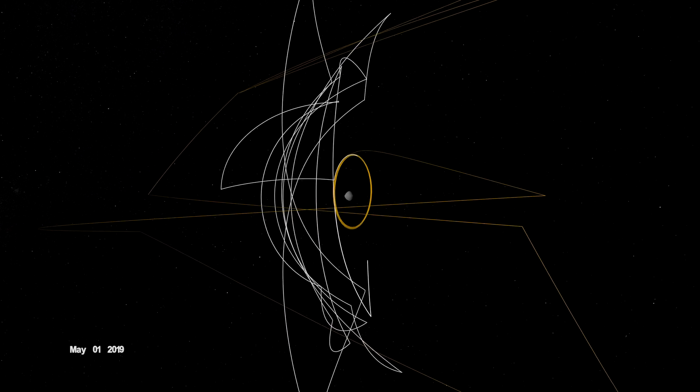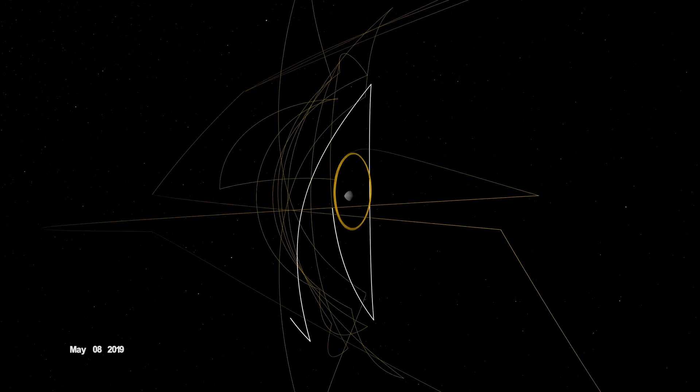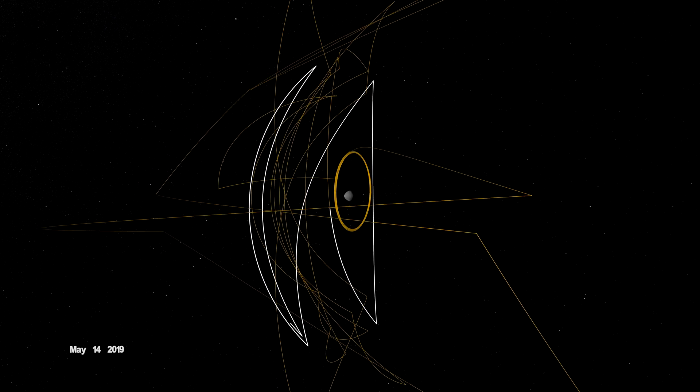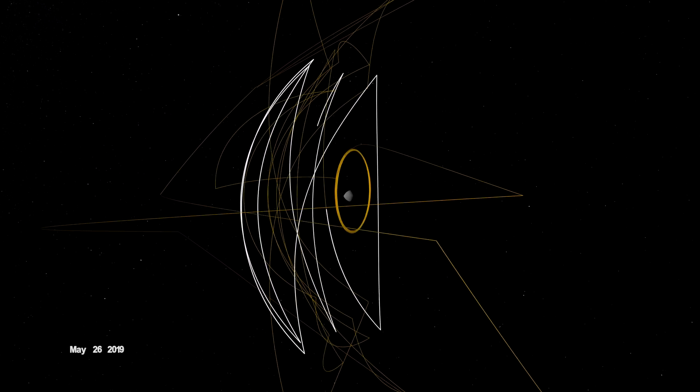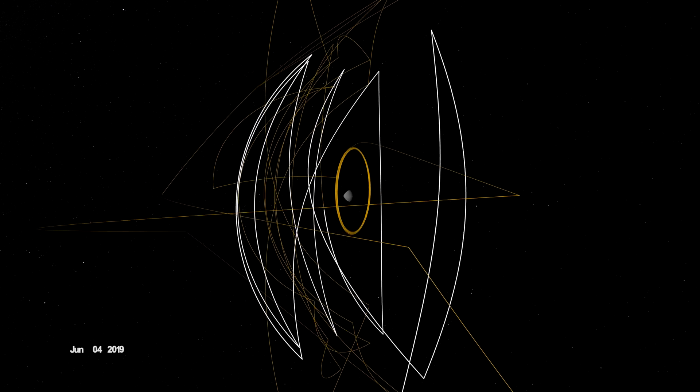During the detailed survey, OSIRIS-REx globally mapped Bennu at only 5 centimeters per pixel, the highest resolution of any planetary body, including Earth.